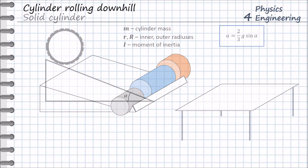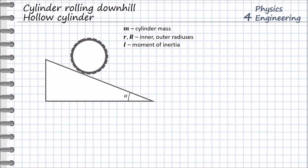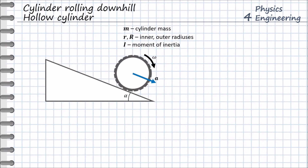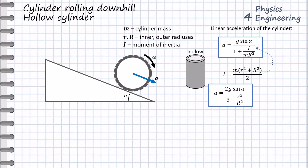Let us now investigate the rolling behavior of a cylinder which has a cut inside — hollow, or tube-shaped. We take the basic equation for the linear acceleration and use the moment of inertia of the hollow cylinder. We obtain the equation for the linear acceleration of the hollow cylinder, which is already a function of its geometry — its inner and outer radii. If we compare this with the formula for the solid cylinder, we see that the linear acceleration of the solid cylinder is always higher than that of the hollow cylinder.